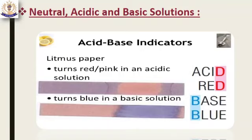Now we can see in the diagram: in a basic solution, hydroxide ion concentration is greater than hydrogen ion concentration; in a neutral solution, both concentrations are equal; and in an acidic solution, hydrogen ion concentration is greater than hydroxide ion concentration. There is an indicator named phenolphthalein — it is a colorless liquid, but when added to a base or basic solution, it turns pink, so it is used to check the basicity of a substance. Another indicator, bromothymol blue, has an original blue color, but when added to an acidic solution, its color turns yellow.